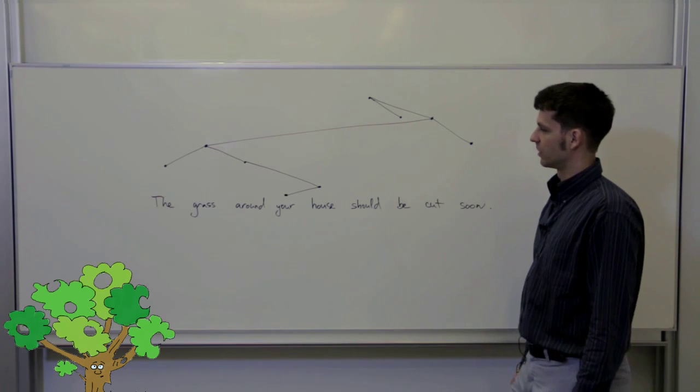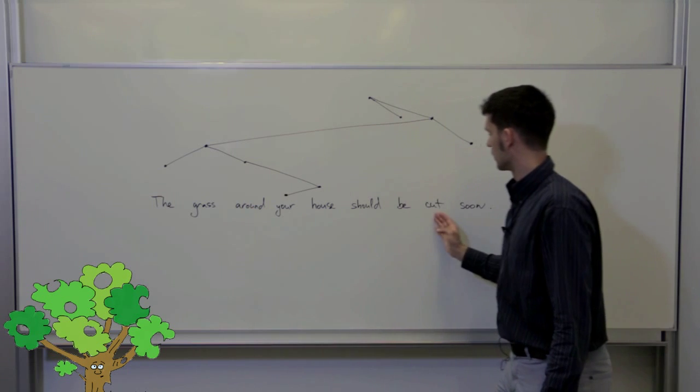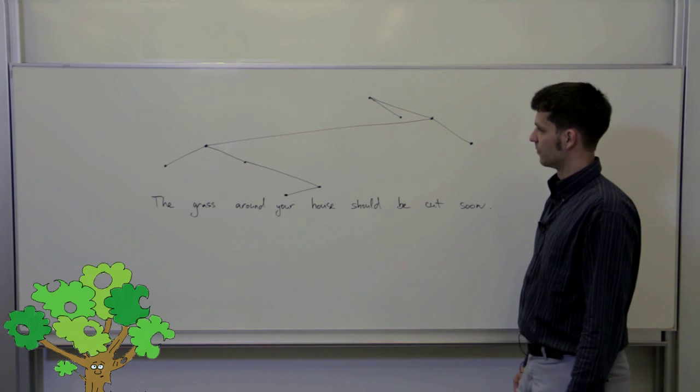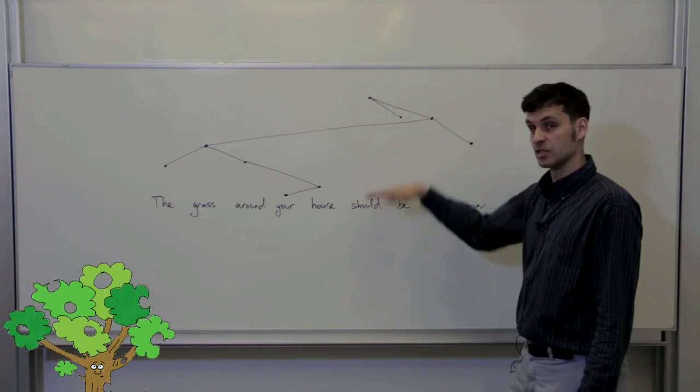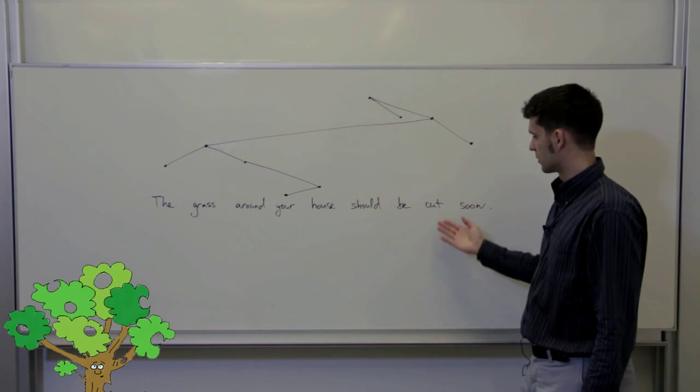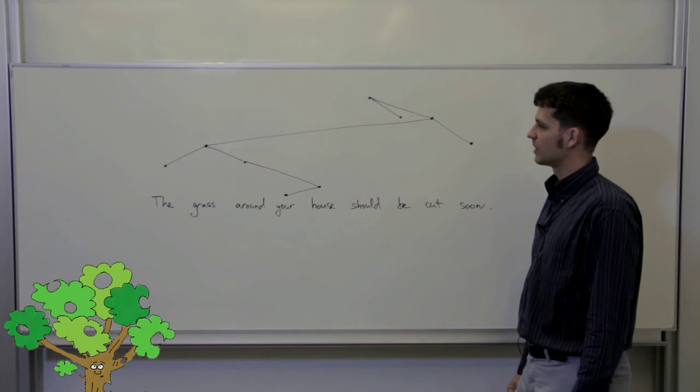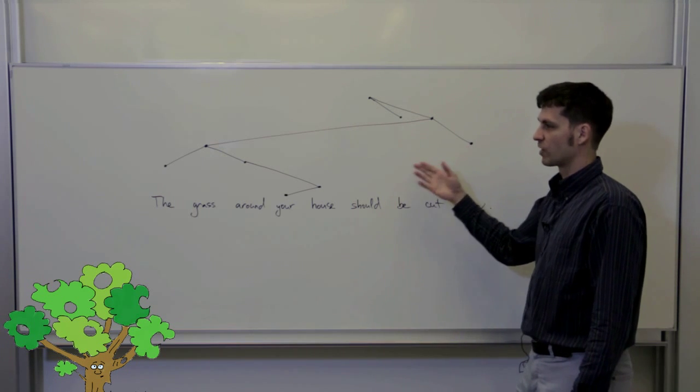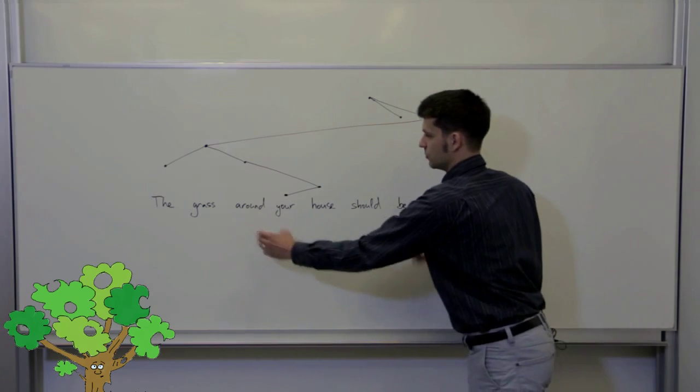In dependency analysis of the sentence, the words 'grass' and 'cut' are actually neighbors. So if an MT system traverses the edges in the graph, it will handle the two words close to each other, and it is likely to pick the right translation. Dependency analysis of the sentence reflects better the relationship between words than n-grams do.